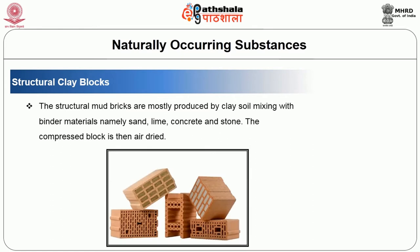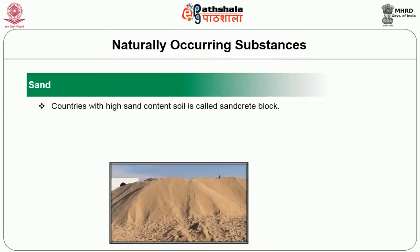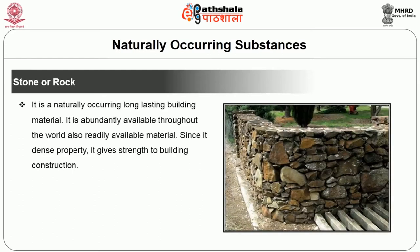Structural clay blocks are mostly produced by clay soil mixed with binder materials namely sand, lime, concrete and stone. The compressed block is then air-dried. Next is sand: countries with high sand content soil use sand creep blocks. This type of block is weaker for structural usage but more economical than clay blocks. Sand mixed with cement or lime can make mortar for masonry work and plastering.